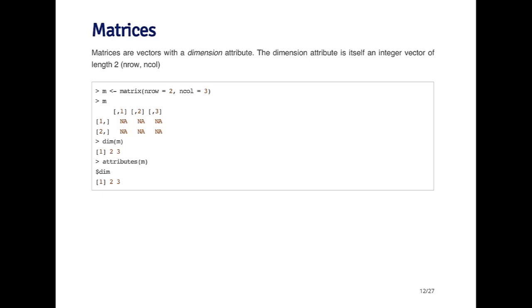Matrices are a special type of vector in R. They're not a separate class of objects, but basically vectors that have an attribute called the dimension. The dimension attribute is an integer vector of length two, where the first number is the number of rows of the matrix, and the second number is the number of columns.